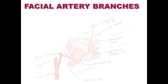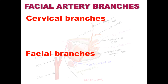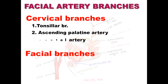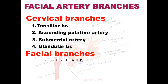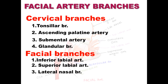The facial artery gives a total of eight branches, which are mainly divided into two parts: the cervical part and the facial part. The cervical part contains four branches: the tonsillar branch, ascending palatine artery, submental artery, and glandular branch. The facial part also contains four branches: inferior labial artery, superior labial artery, lateral nasal branch, and angular artery — which is the terminal branch.